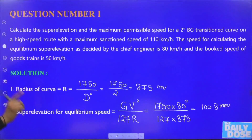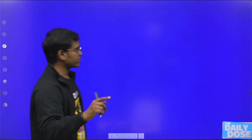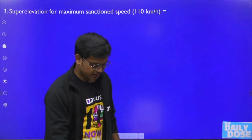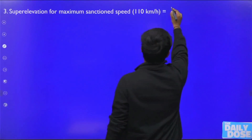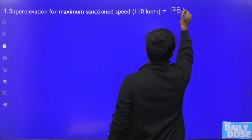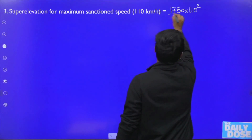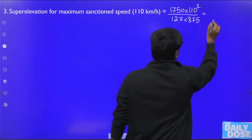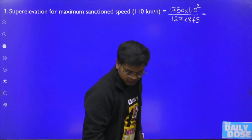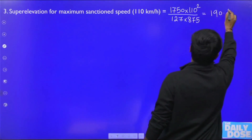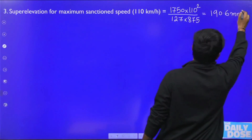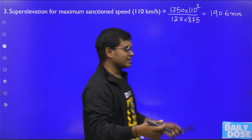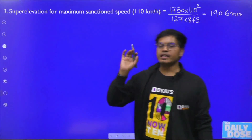Now find the super elevation corresponding to the maximum sanctioned speed of 110 km/h — this is the theoretical cant. Using the same formula: 1750 × 110² / (127 × 875) = 190.6 mm. This is the theoretical cant.